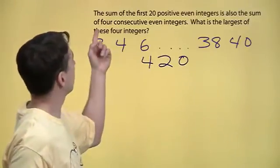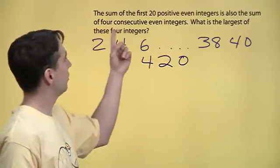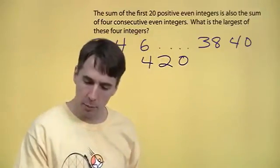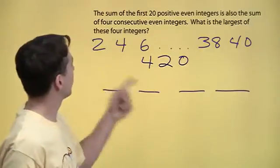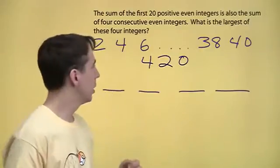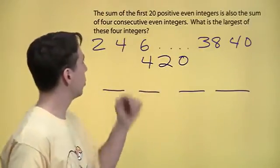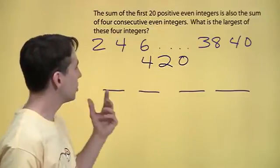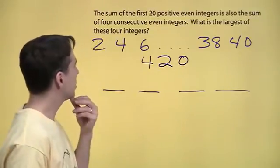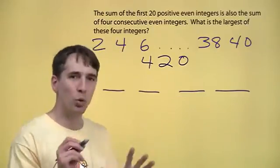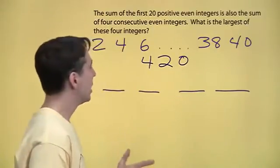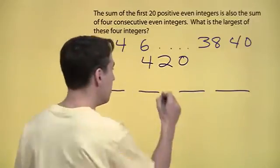Now we have to deal with the other four consecutive even integers. So let's go ahead and put in blanks for them. And we need to figure out what the largest one is. All we know about them is their sum and that there are four consecutive even integers. So how can we figure out what these numbers are?